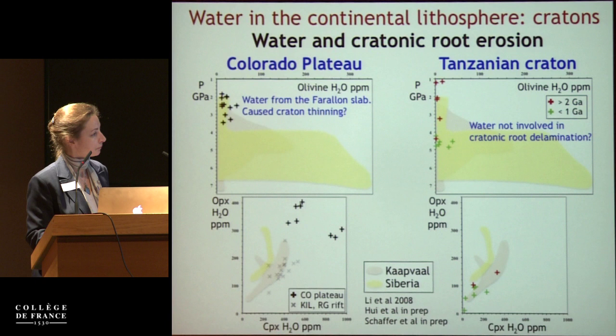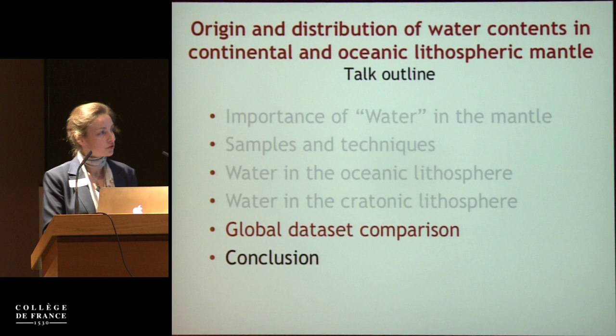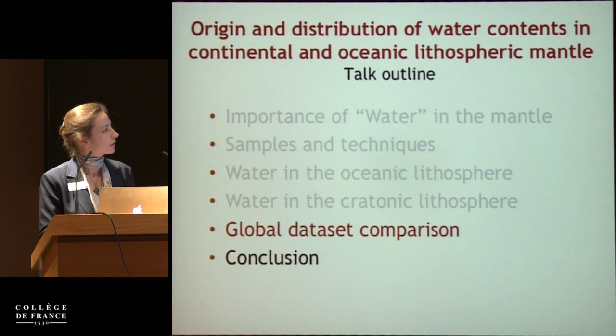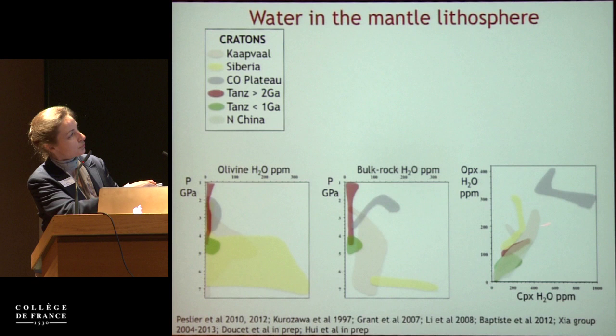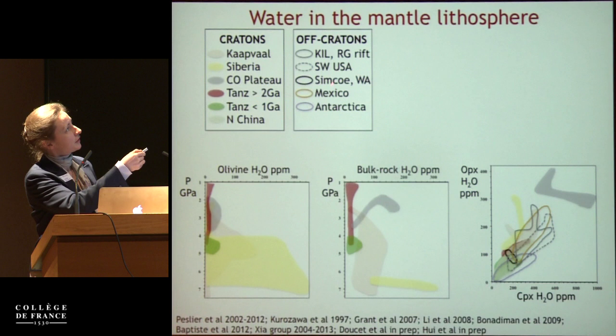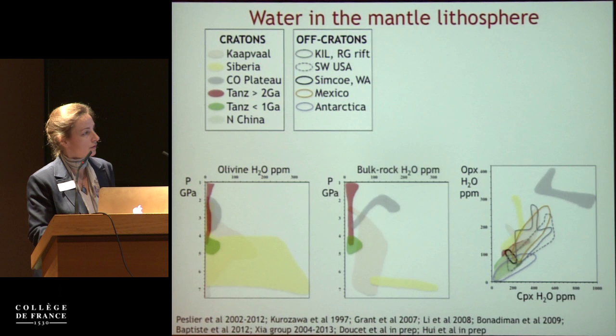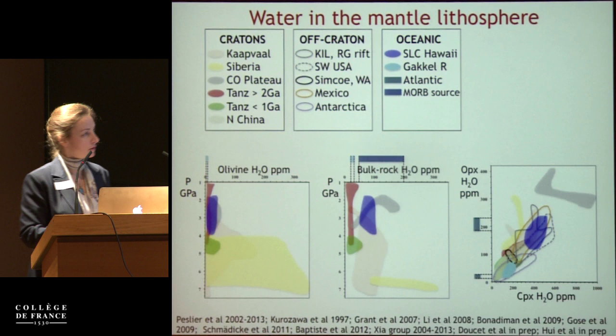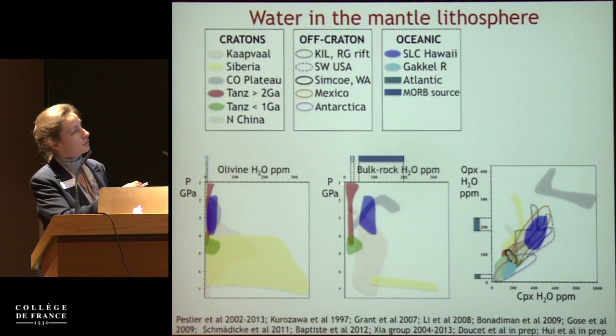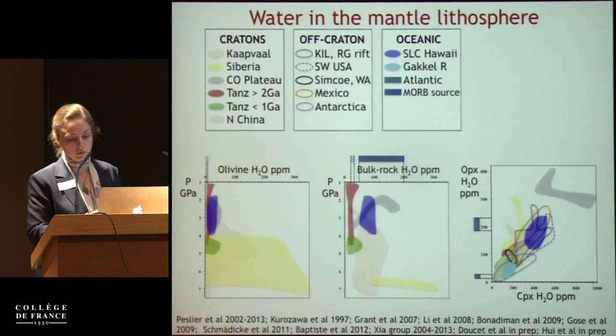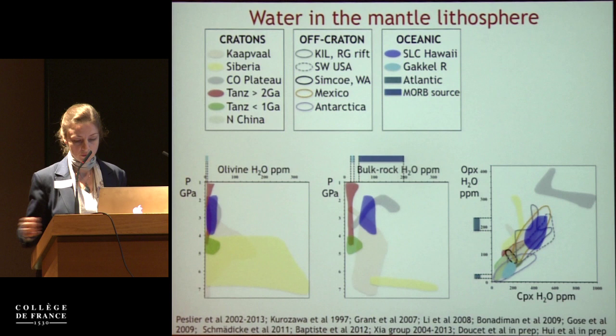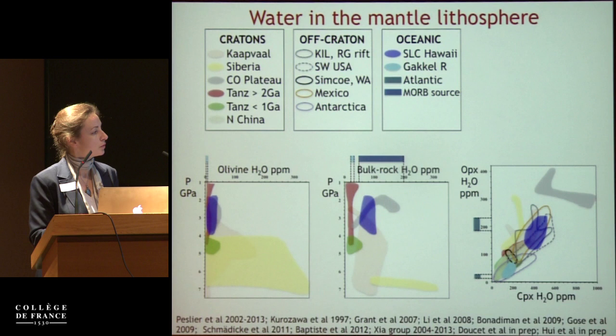Finally, a comparison of the global dataset for water in the mantle. Olivine and pyroxene water content versus pressure across all settings: cratonic data, off-craton continental data, and oceanic data all show that bulk rock water contents are typically between 10 and 150 ppm — very similar to what is thought to be the MORB source in terms of water content. There is no dramatic systematic difference between cratonic, off-craton continental, and oceanic mantle in terms of bulk water content.